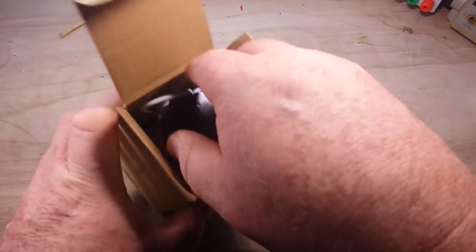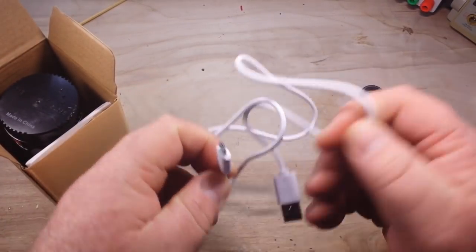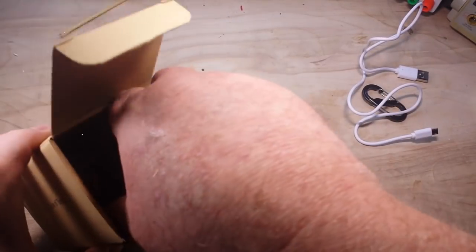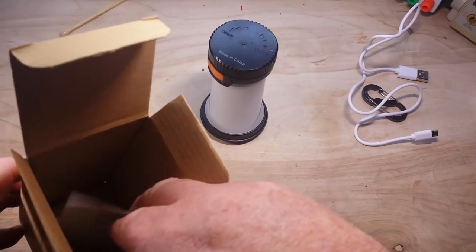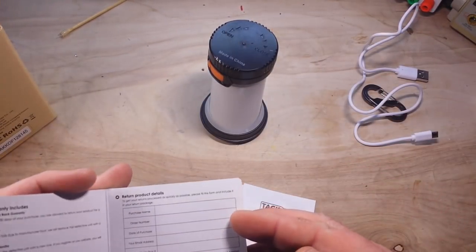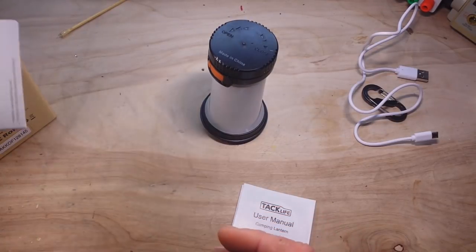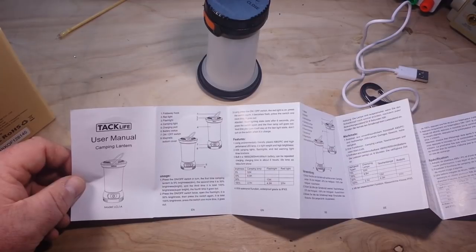So it comes with a little S-hook style carabiner, micro USB charging cord, here's the lantern itself, instruction manual and warranty card. Very nice.